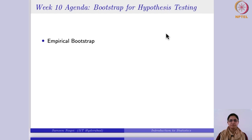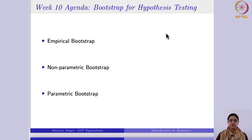First, we will learn what bootstrapping is and its background. We are going to focus on the non-parametric bootstrap method, where we do not assume any distribution or make any assumptions about the population distribution from which the sample has been taken. The other one is parametric bootstrap — where we know the distribution, but it is not necessarily normally distributed. For both cases, we will see how to test claims about the population mean, population variance, and for the two sample problem as well.